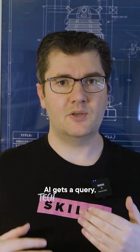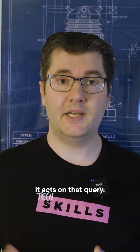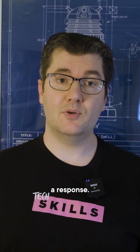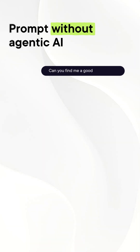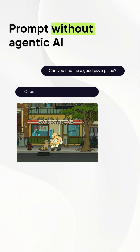Normally, an AI gets a query, it acts on that query, and it gives you a response. An example might be: can you find me a good pizza place? And the AI might recommend Panucci's Pizza.